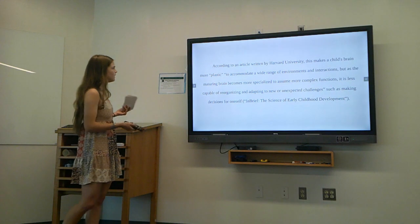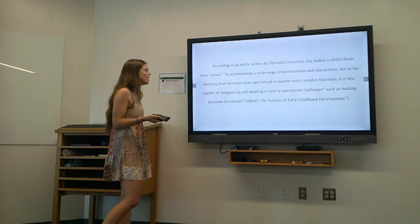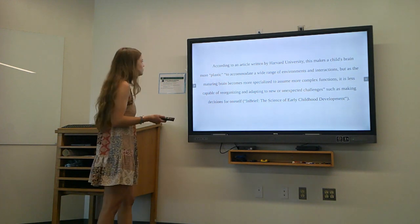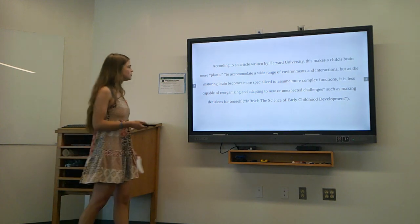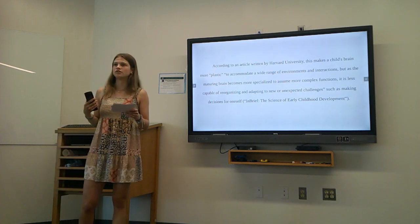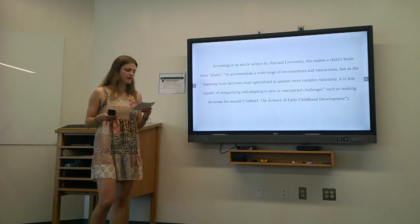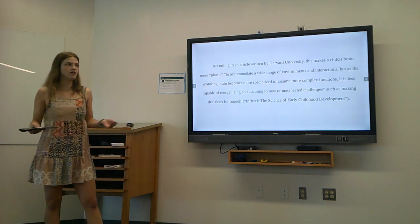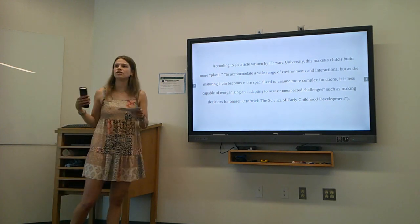And according to an article written by Harvard University, this makes a child's brain more plastic to accommodate a wide range of environments and interactions. But as the maturing brain becomes more specialized to assume more complex functions, it is less capable of reorganizing and adapting to new or unexpected challenges, such as making decisions for ourselves. So, if we aren't teaching children to hone in on their self-reliance skills from the start, then it becomes more and more difficult for us to develop these skills and trusting ourselves and our intuition as we grow older and become teenagers or adults.